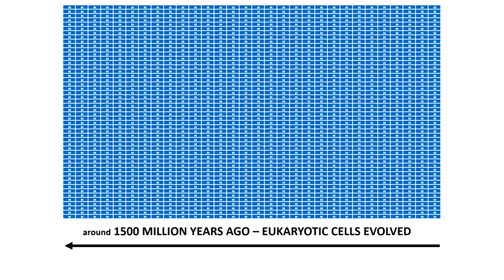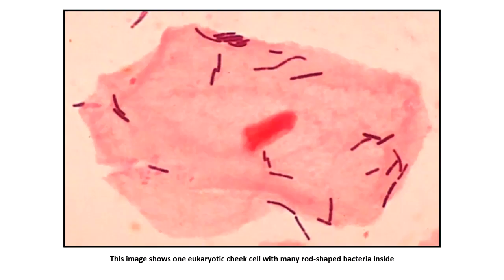The next big block is very significant in life: the creation of a new kind of cell called a eukaryotic cell. This was about 1,500 million years ago, or about one and a half billion years ago, when we first started to see evidence of this different kind of cell called a eukaryotic cell.